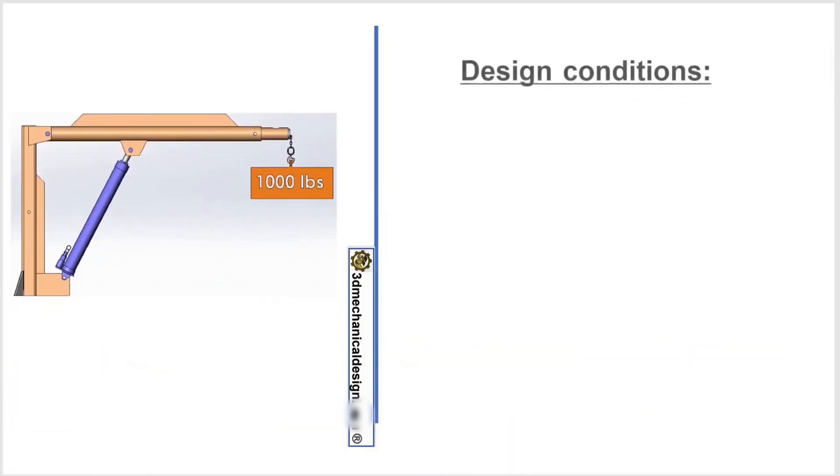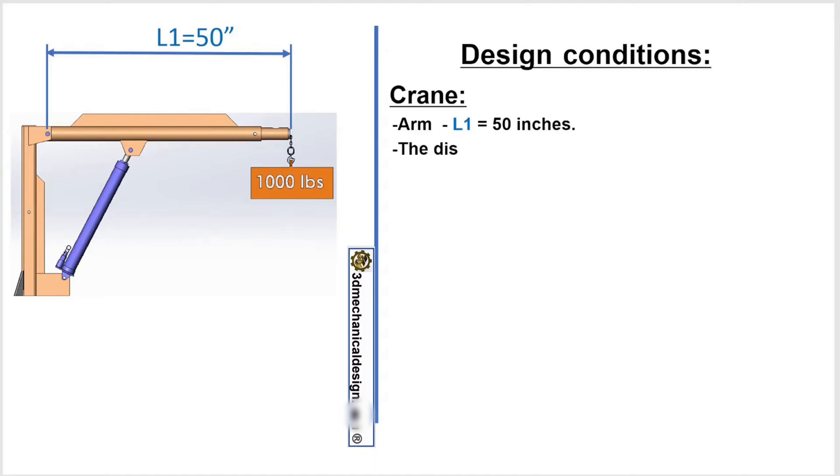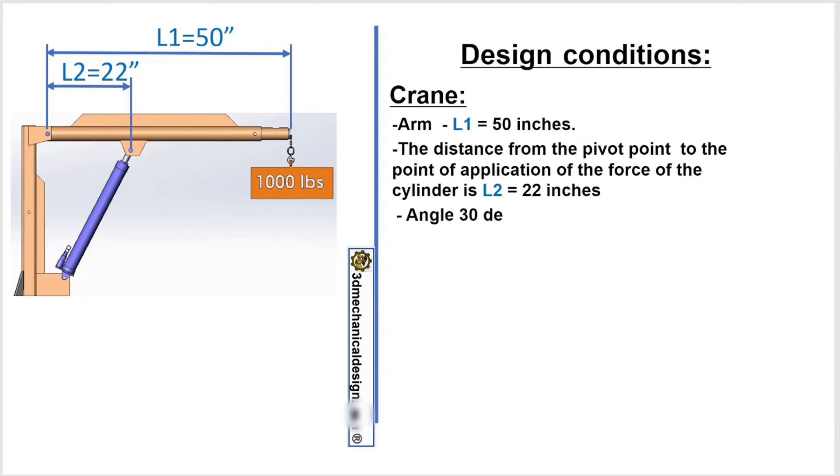Solution. Design Conditions. Arm L1 equals 50 inches. The distance from the pivot point to the point of application of the force of the cylinder is L2 equals 22 inches. Angle 30 degrees. Load weight is W equals 1000 pounds.